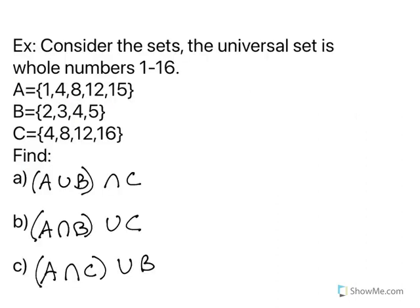So we have the universal set as whole numbers 1 to 16. Set a is 1, 4, 8, 12, and 15. Set b is 2, 3, 4, and 5, and then set c is 4, 8, 12, and 16. So in letter a, we're going to find (a or b) and c. Now when you're doing these operations on sets, it's very much like we're doing order of operations. We have to find that one that's in parentheses first.